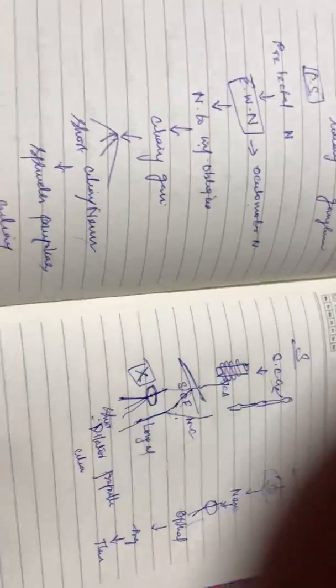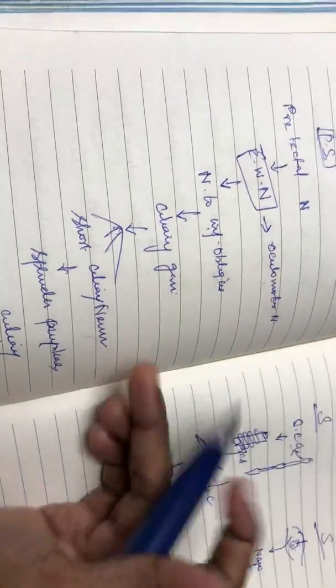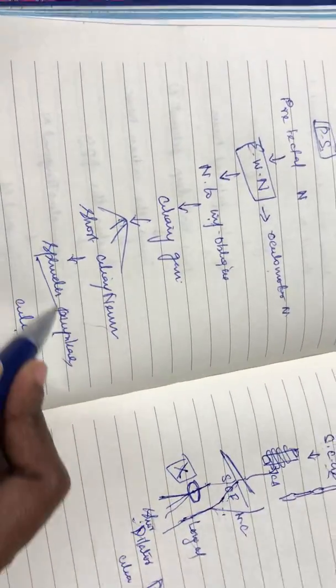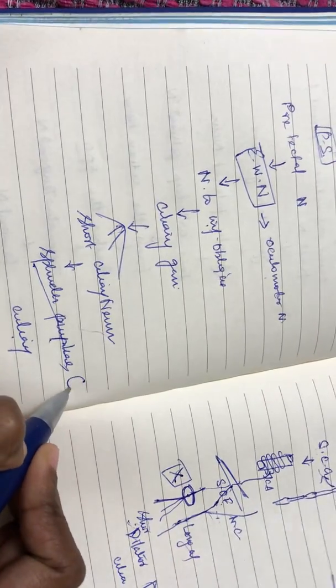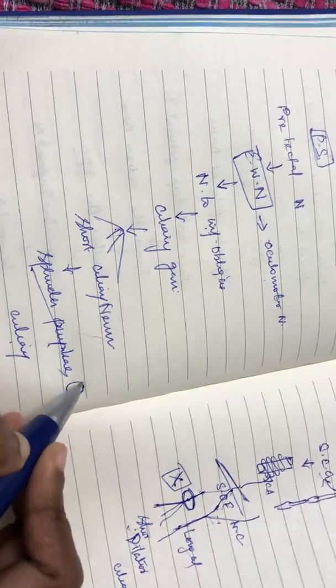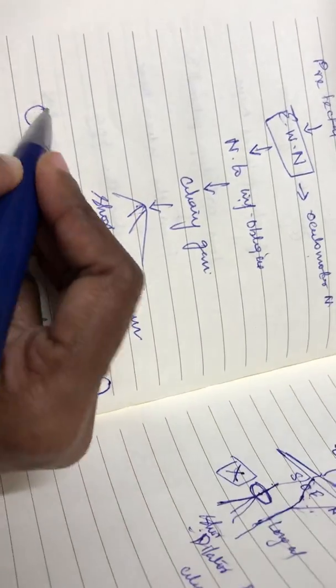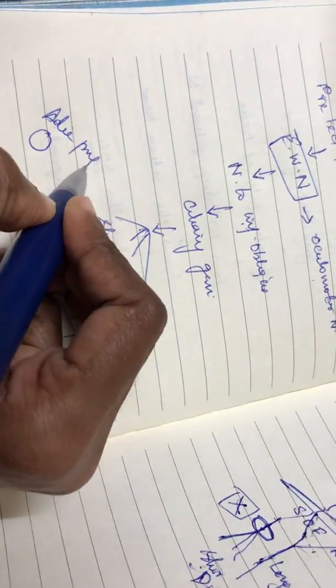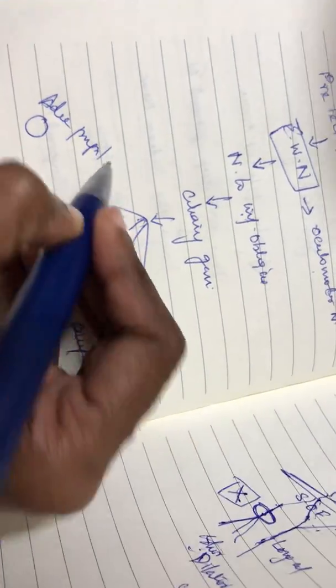So this covers the ciliary ganglion — sympathetic, parasympathetic, and sensory. Now, what happens if the parasympathetic supply is lost? The sphincter pupillae will not work, so the pupil will be dilated. This condition of dilated pupil is called Adie's pupil.